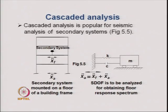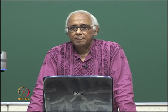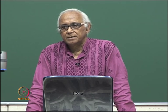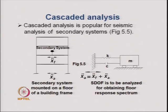Similarly, in nuclear power plant structures, we have many secondary systems, and many of the structures in nuclear power plants are idealized as secondary systems. We also have structures like buildings on the top of which there is a small tower — the tower is considered a secondary system. There are many such examples of secondary systems used in civil engineering structures.